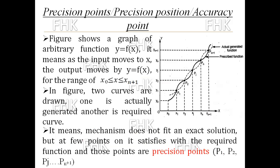A figure shows a graph of an arbitrary function y = f(x). As the input link moves to x, the output link moves by function y = f(x), for the range x = 0 up to x_n+1. In the figure, two curves are drawn: one is the actually generated curve shown by a dotted line, and another is the required curve. The mechanism does not fit an exact solution, but at a few points it satisfies the required function, and those points are called precision points.